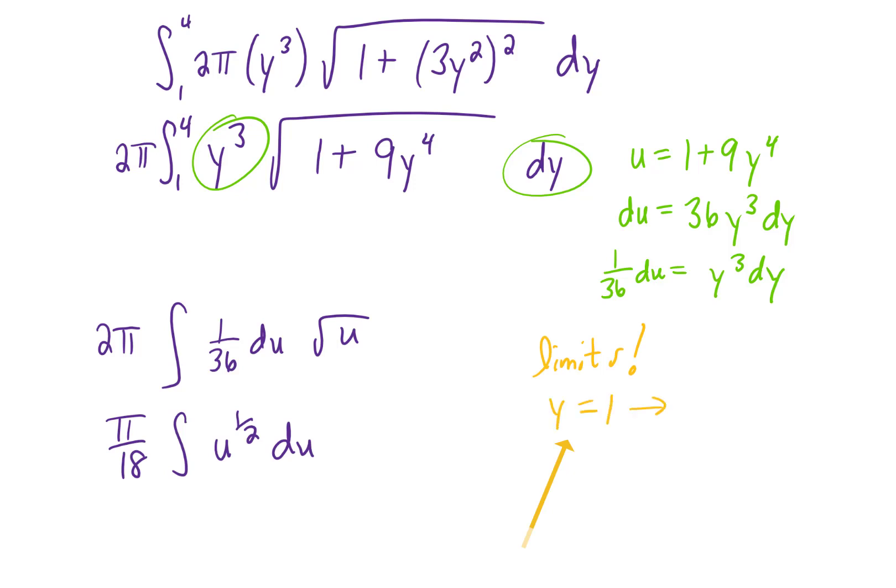Our lower limit of integration was y equals 1, but in this formula right here, that corresponds to u equals 10. Our upper limit of integration is y equals 4, and plugging that into this formula up here to find u gives us u equals 2305. So, our limits of integration now on u are going to be 10 to 2305.